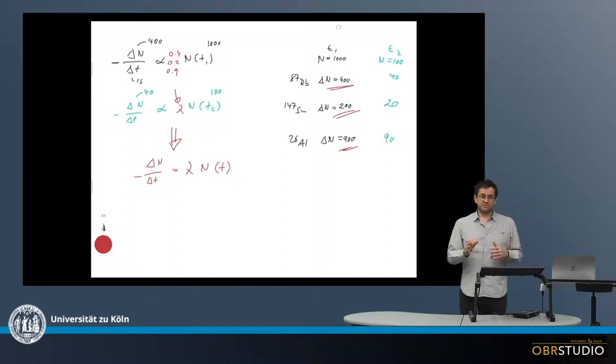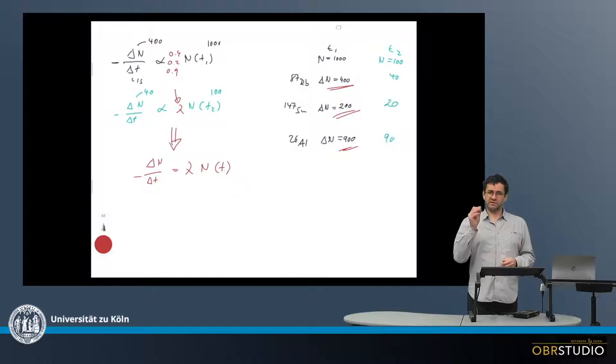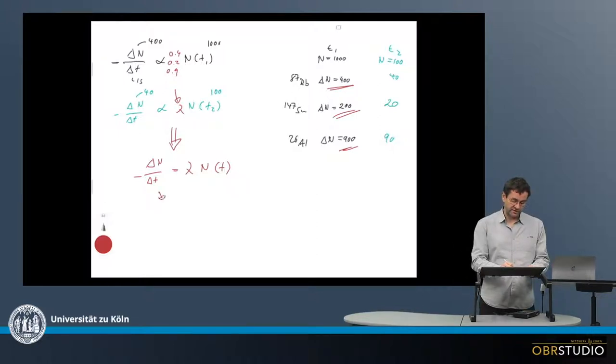And as it is written, dn, it means the amount of material decaying in a certain amount of time. But we want to know it in an infinitesimal small amount of time, which is why we write here dn divided by dt, a minus in front of here, equals lambda n of t.